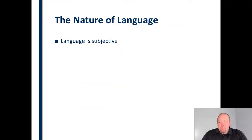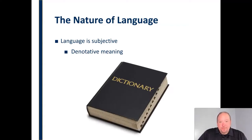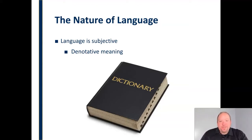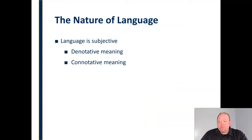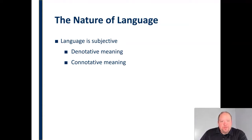Language is also subjective, meaning it can be slightly different for each person. Every word has two types of meaning. First, there's a denotative meaning — what we'd call the dictionary definition. No matter who you are, as long as you use the same language, a word has that specific literal meaning. But every word also has a connotative meaning, which is more figurative and subjective. It's dependent on that person's interpretation and can differ from person to person based on their frame of reference — their knowledge, experience, history, and culture — all of which affect how they view a word and what it means for them.